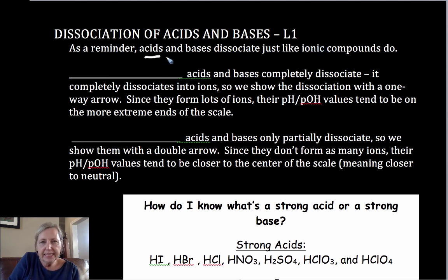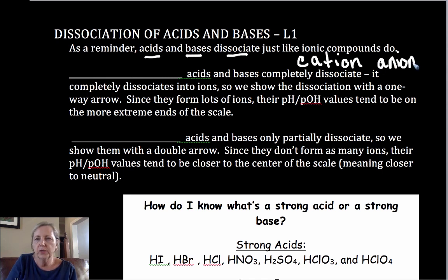Now acids and bases dissociate into ions, your cation and your anion, just like ionic compounds do. So if you've done these reactions with ionic compounds, there's a similarity here. So if we have a strong acid or base, that dissociation is considered to be 100%, or that they completely dissociate.